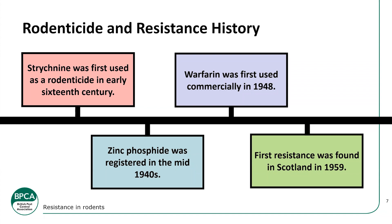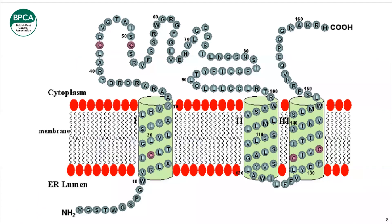During the 1960s, resistance was found in other areas such as Wales, Sussex, Kent, and then Hampshire — which we know nowadays is the most problematic area of the country. The story somewhat repeats itself in the 1970s and 80s when second-generation anticoagulants — difenacoum and bromadiolone — came to market. Within a few years, resistance was found in East Anglia, Yorkshire, and Lincolnshire. It was at this point that single-feed products were developed, bringing us to the modern day with the products and legal restrictions we have now.